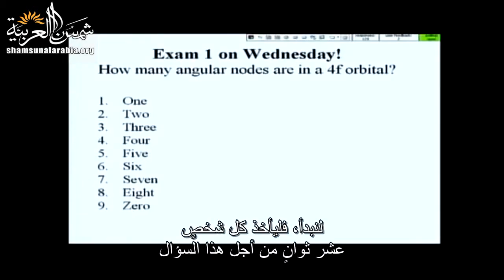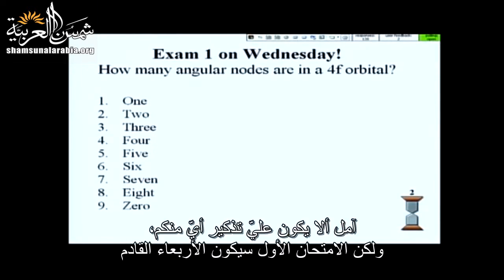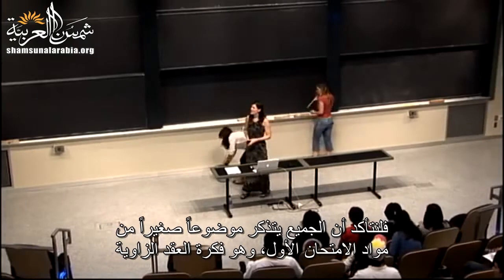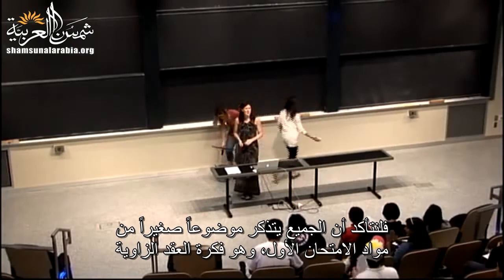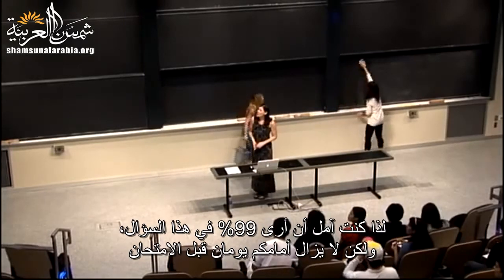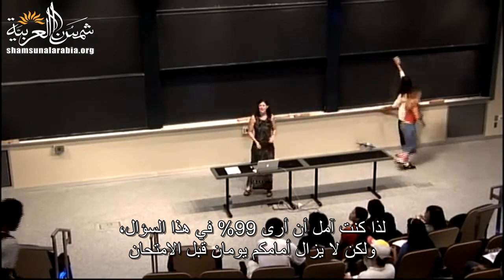Let's get started. Can everyone take 10 more seconds on the clicker questions? As a reminder, exam one is on Wednesday. Rather than our clicker question being on something from last class, which is exam two material, let's just make sure everyone remembers some small topic from exam one material, which is the idea of angular nodes. I was hoping to see more like 99% on this, but you do still have two more days before the exam.